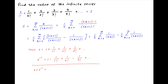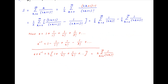Adding these two expressions, we get e + e⁻¹ = 2 times (1 + 1/2! + 1/4! + ...), which can be expressed as 2 times the summation of 1 upon (2k)!, where k goes from 0 to infinity. It therefore follows that the summation of 1/(2k)!, k from 0 to infinity, is equal to half of (e + e⁻¹).